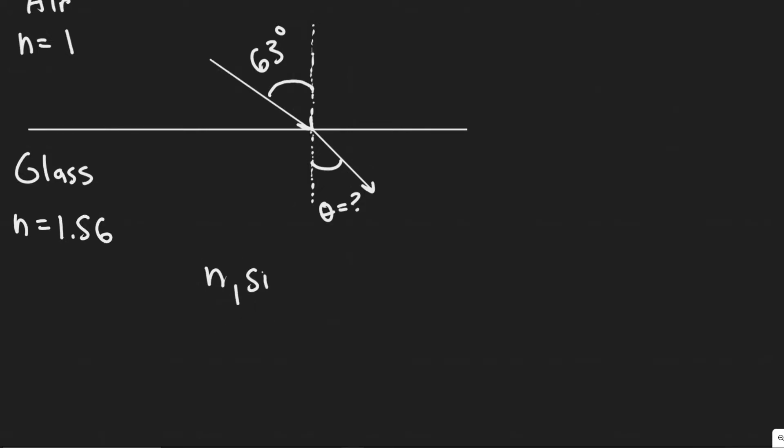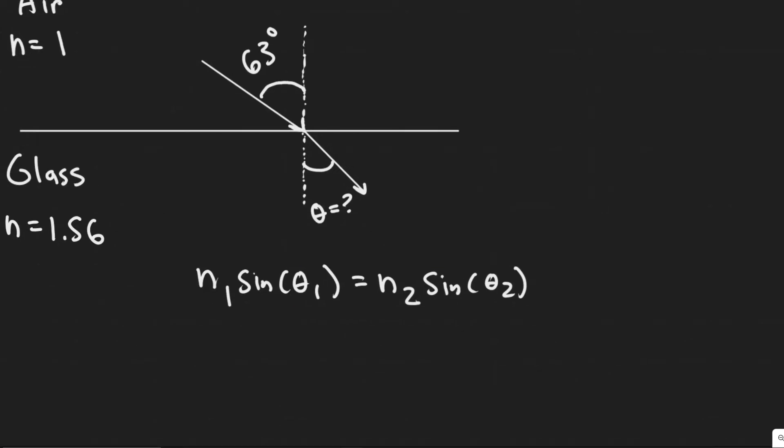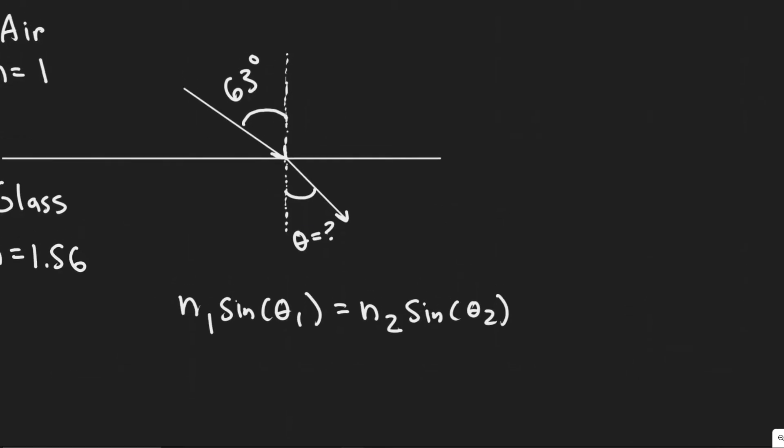Snell's Law is this formula right here, which is n1 sine of theta 1 equals n2 sine of theta 2. So this is what we're going to be using in order to solve. Snell's Law basically just tells us how it's going to change direction as we go from one medium to another.